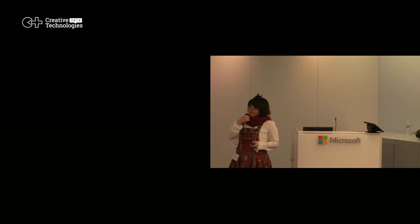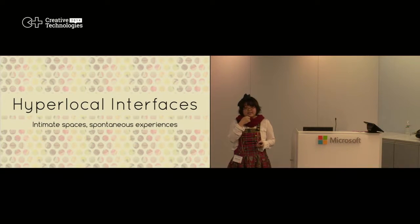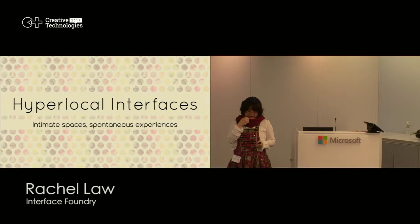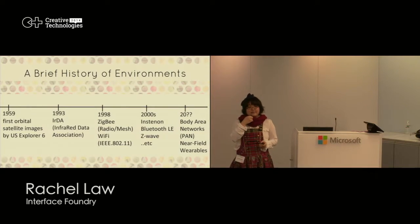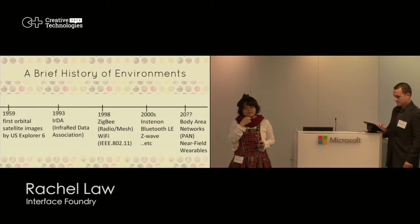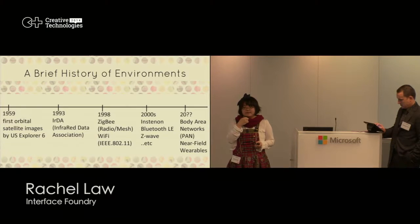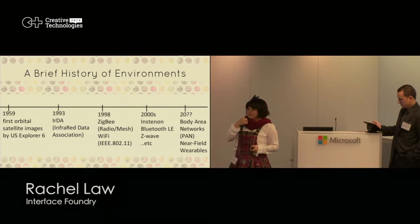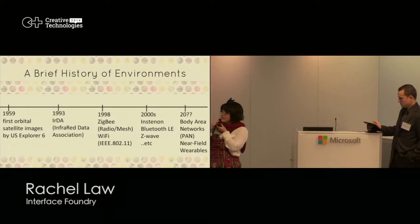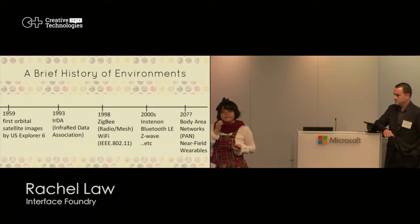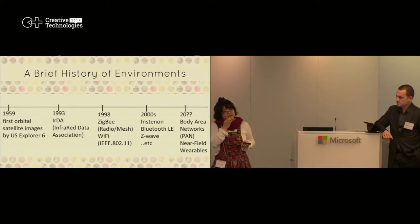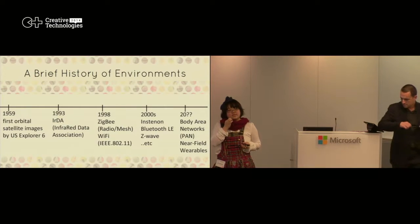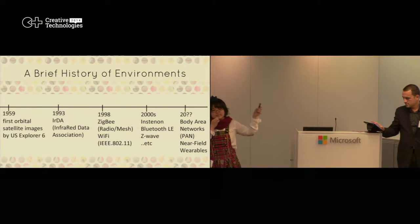So, hyperlocal interfaces. The idea behind it is: where do environments come from and what do we consider as environments? Here's a brief history of environments, starting from it in terms of scale. What do we call environments? This is particularly important in creative tech because the theme is environments, humans, and how we interact with them. The first kind of environment we've seen is satellite orbit images from 1959 when NASA started their space program. They launched a suborbital satellite that took satellite imagery.